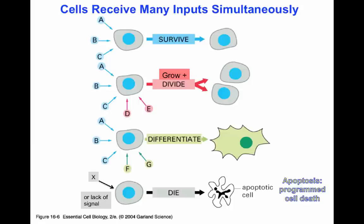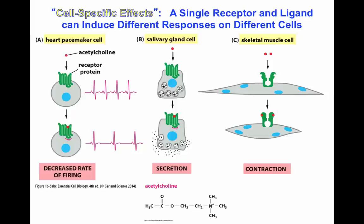An important factor is the cell having the receptors for all those signals. You can differentiate the way signals are received by the expression of receptors found on the surface of the cell. The example here is acetylcholine: when we look at the acetylcholine receptor in skeletal muscle, the acetylcholine molecule binds to a ligand-gated channel. When that channel binds acetylcholine, it opens and rushes sodium ions inside the cell, leading to contraction of the muscle cell.